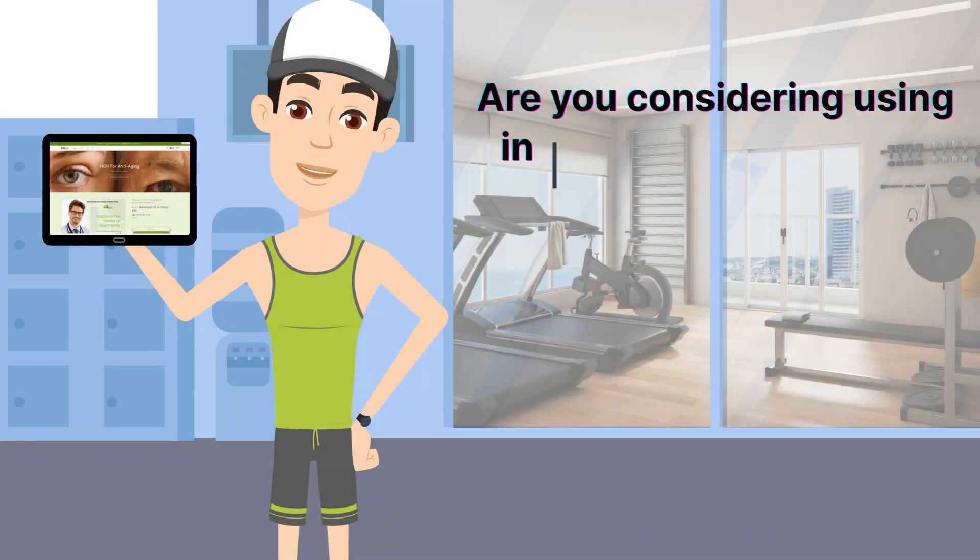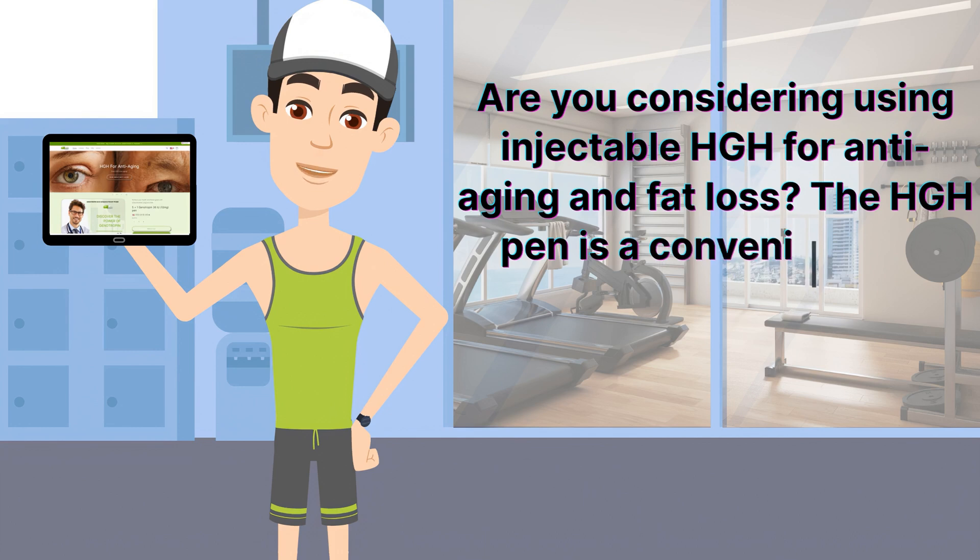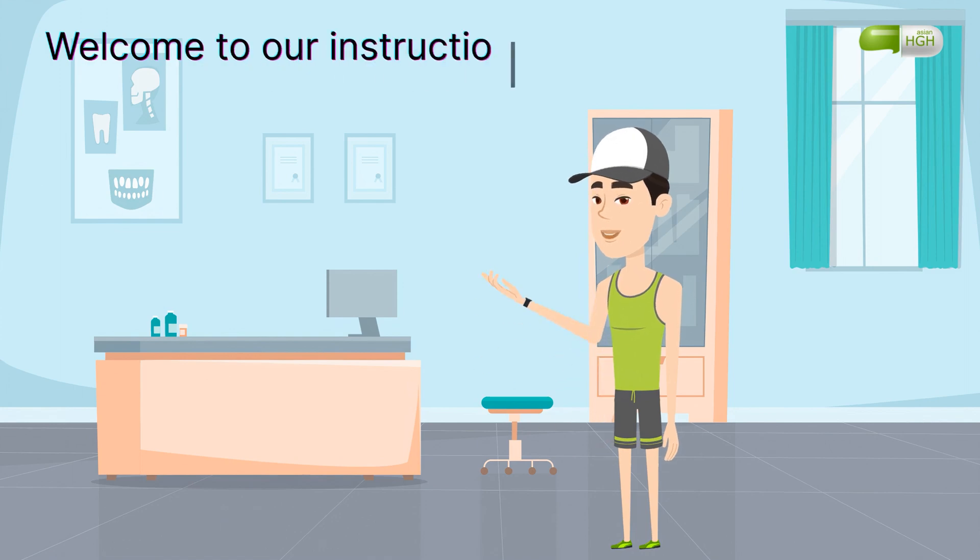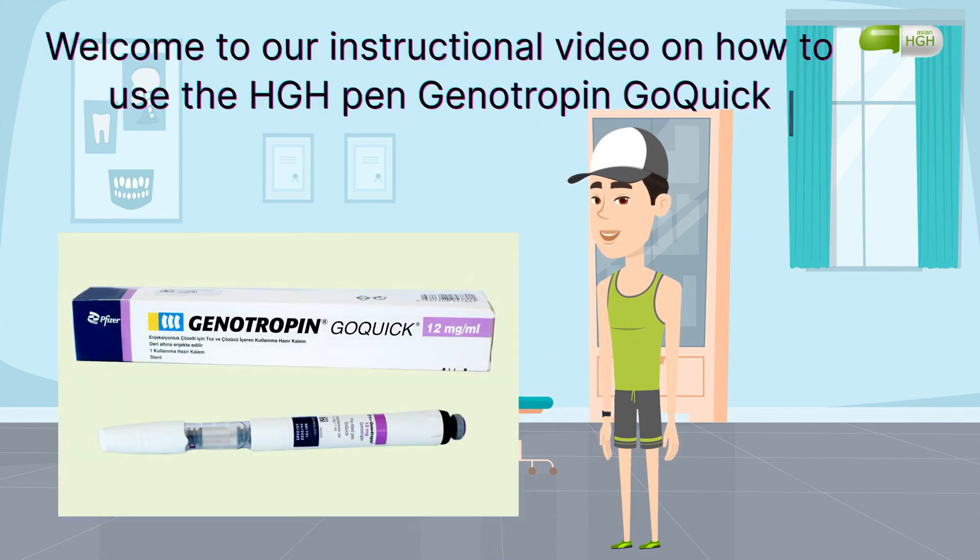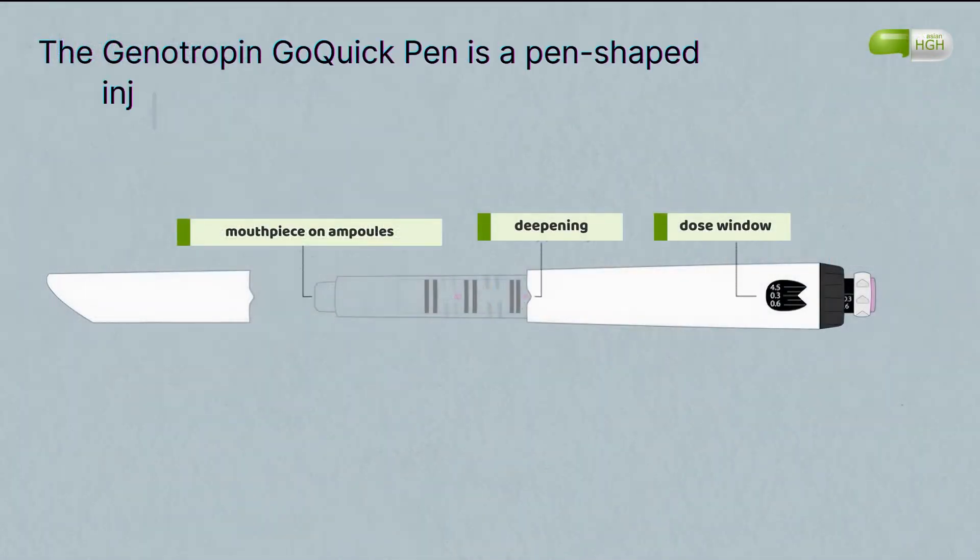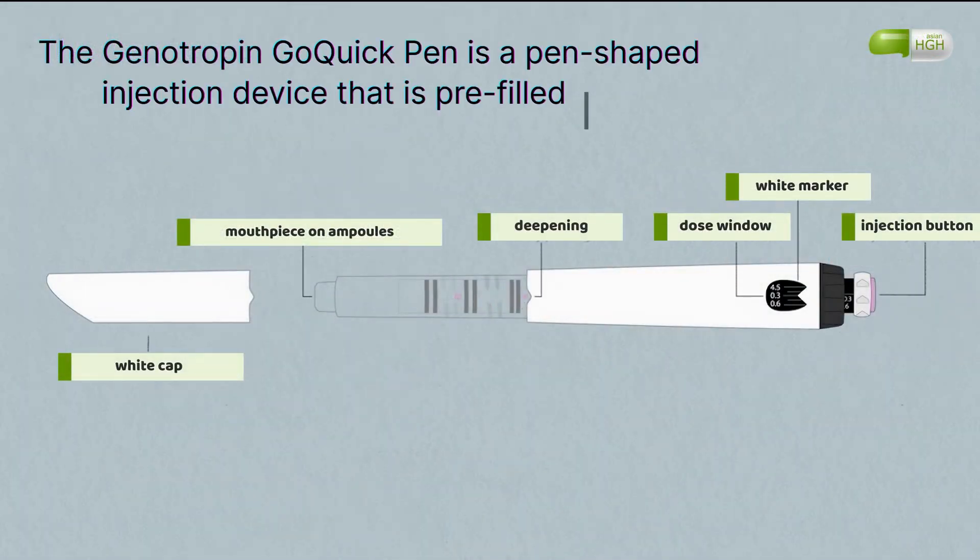Are you considering using injectable HGH for anti-aging and fat loss? The HGH pen is a convenient and easy-to-use option for delivering the hormone to your body. Welcome to our instructional video on how to use the HGH pen Genotropin GoQuick. The Genotropin GoQuick pen is a pen-shaped injection device that is pre-filled with Genotropin human growth hormone.